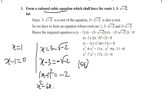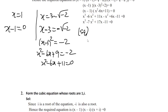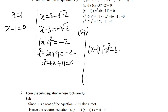We get x² minus 6x plus 9 equals minus 2, which gives x² minus 6x plus 9 plus 2 equals 0, that is x² minus 6x plus 11 equals 0.